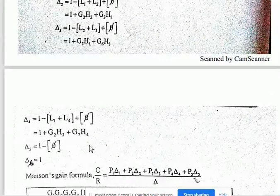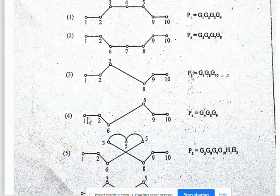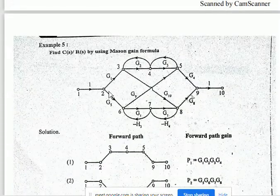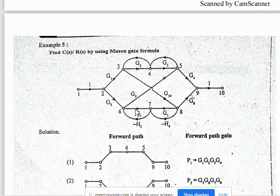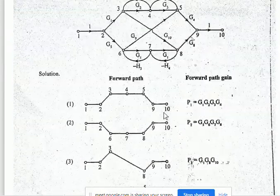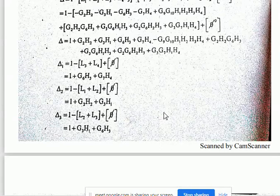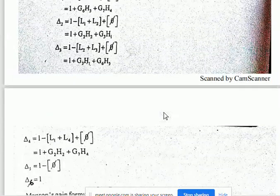For Delta 4, the fourth forward path is 1→2→6→5→9→10. Loops L2 and L3 touch this path, but L1 and L4 do not. Therefore L1 and L4 are non-touching to the fourth forward path, so Delta 4 includes L1 and L4.